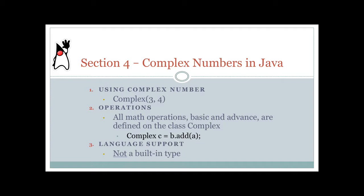Java, surprisingly, does not have complex numbers built in. I find it surprising because the language came after C++ with the intention of being better than C++, but Java never fixed this. Even when C++ went to a standard, they could have just made it much cleaner to use in the language.